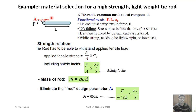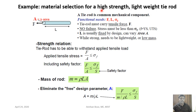Let us work through material selection for a high-strength, lightweight tie rod. A tie rod is a member that can take only tensile load — it cannot take compressive load. The two main requirements are high strength and lightweight (minimum mass). Suppose F is the tensile force applied, L is the length of the tie rod, and A is the cross-sectional area.